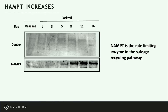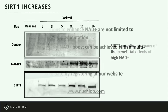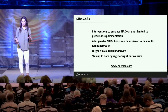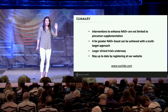NAD levels going up is important, but it's actually what NAD switches on that delivers the beneficial effects — for example, your sirtuins, the longevity genes. We wanted to show that we could not only boost NAD levels but also activate these beneficial downstream effects. Looking at sirtuin expression, it was barely detectable in the baseline blood samples, but over the course of the treatment the expression of SIRT1 increased significantly. I hope I've shown that interventions to enhance your NAD are not limited to precursor supplementation — in fact, you can get a far greater increase in NAD levels using these types of multi-targeted approaches.